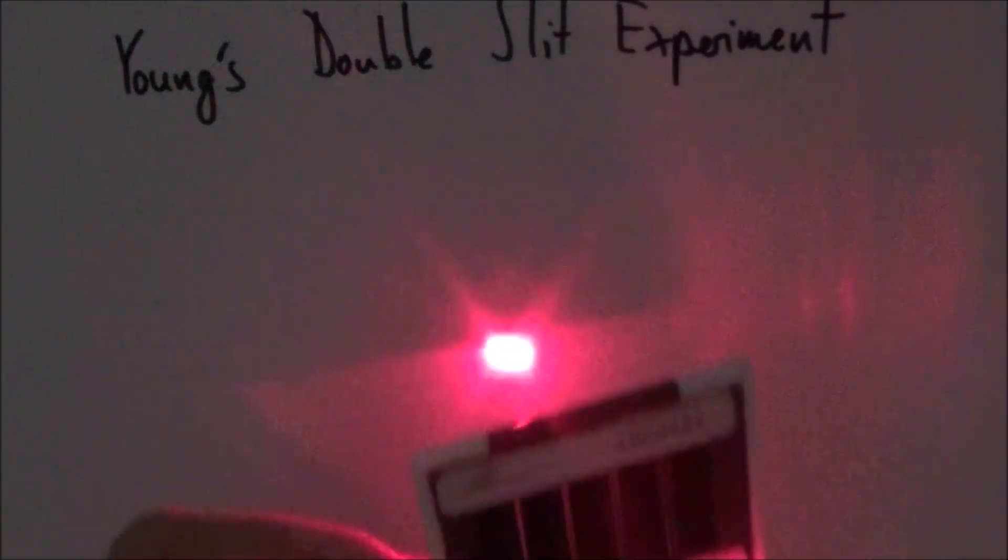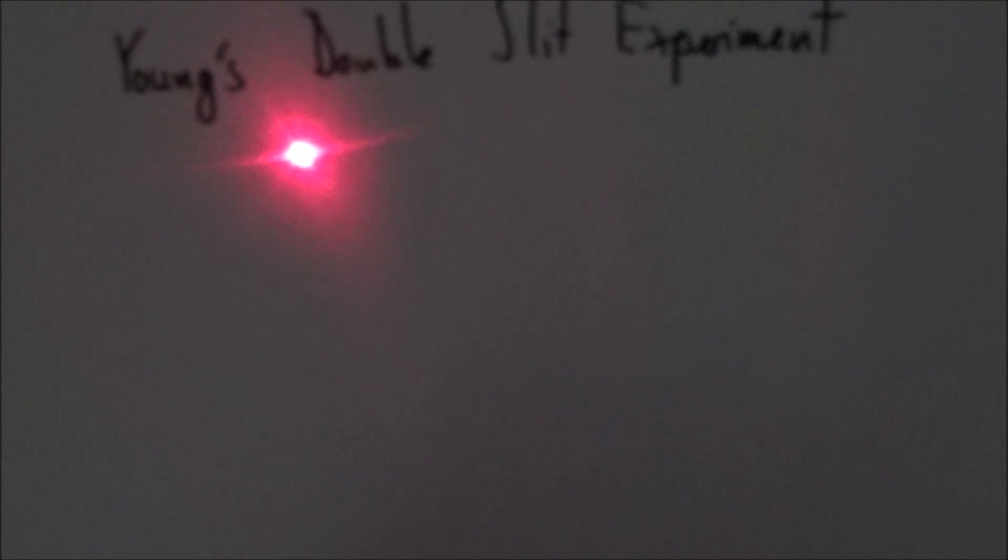When I turn on the light and shine it through one of these double slits, we can see how the light spreads out left and right in a sort of long line with a really bright maxima in the middle.